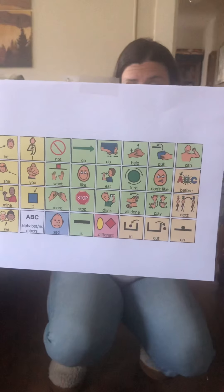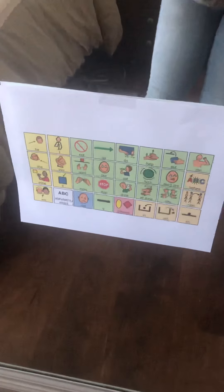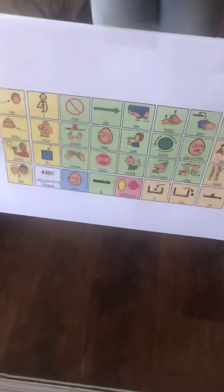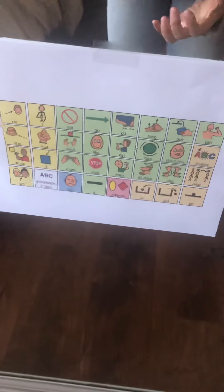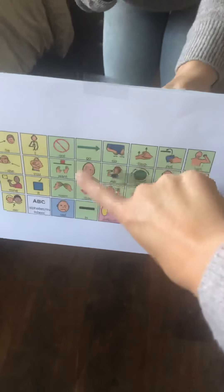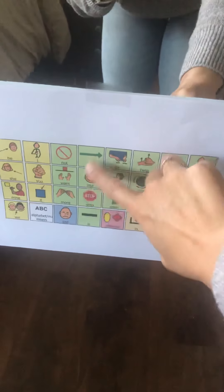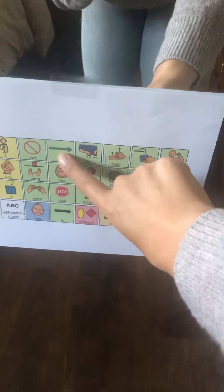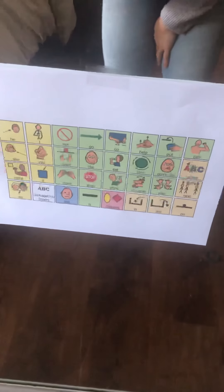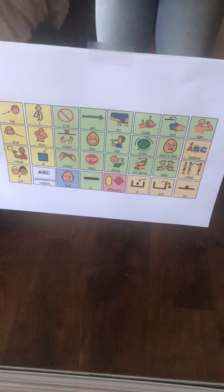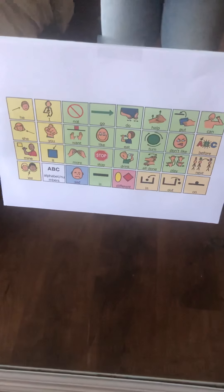Even if you just find one icon and use it over and over again, that's perfect. The point of core communication is learning those specific vocabulary words, like 'go' — we're going to the bathroom, we're going to the park, we're going to grandma's, we're going to stay inside. Okay, I am signing off for now.